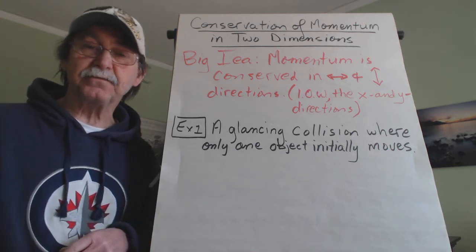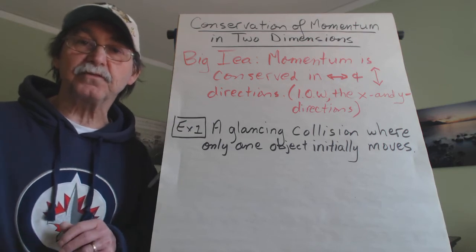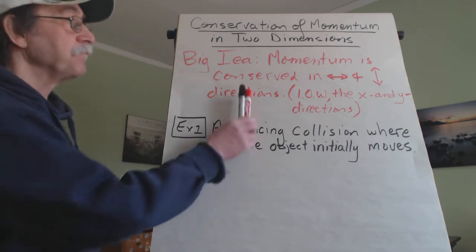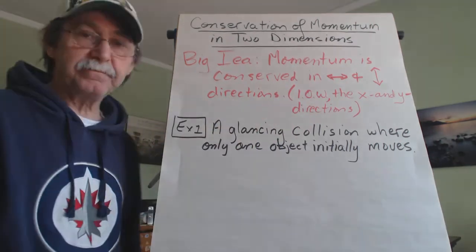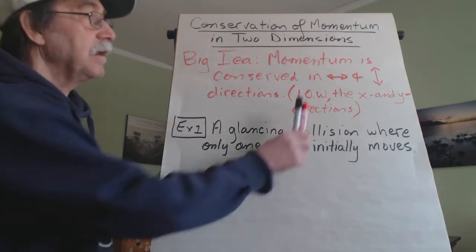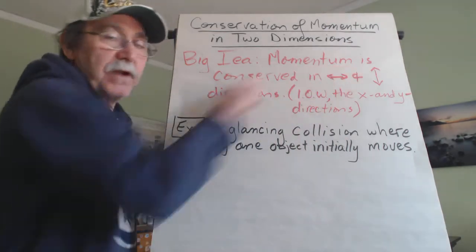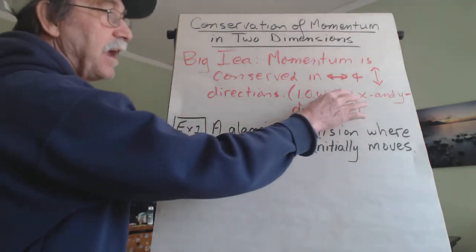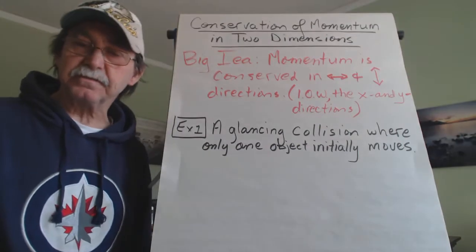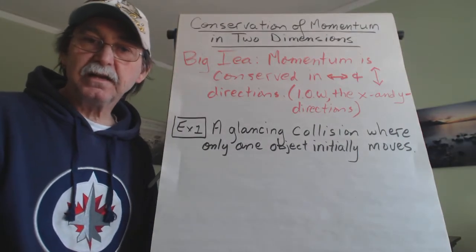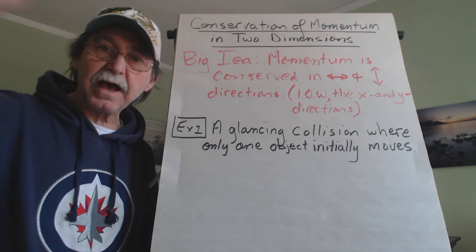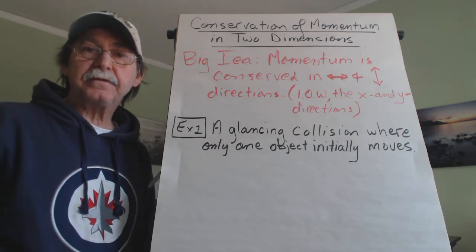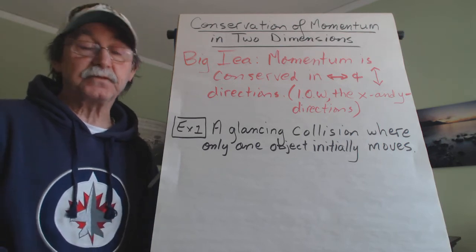But now we're going to take that to a new step and we're going to talk about two dimensions. And the big idea is this. Momentum is conserved in the sideways directions and the up and down directions. In other words, the x and y directions. When something is done in two dimensions, we'll overlay a coordinate system of some sort and just treat it as x and y coordinates. So here we go.